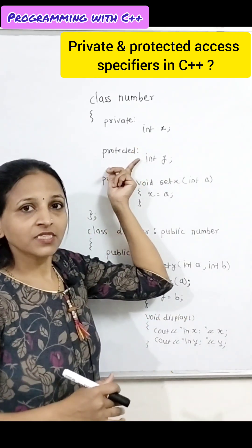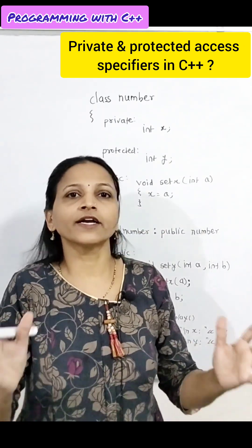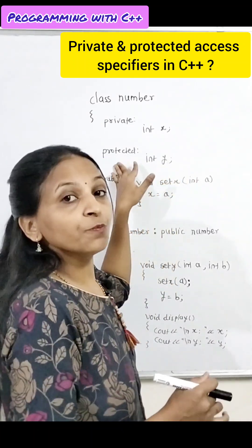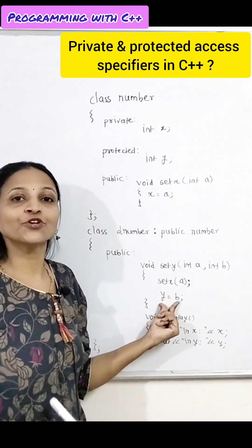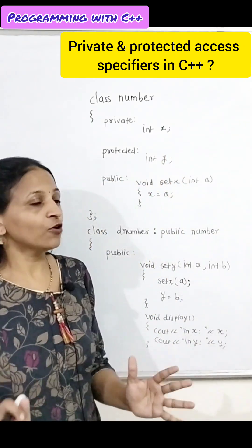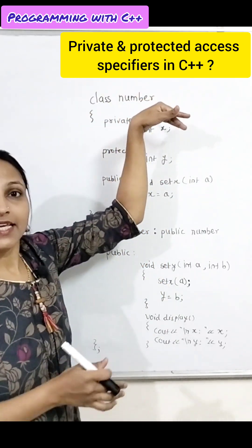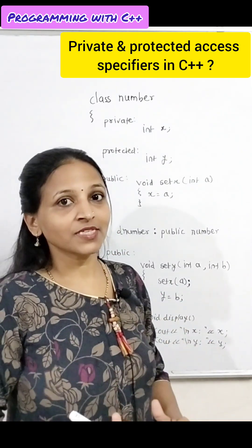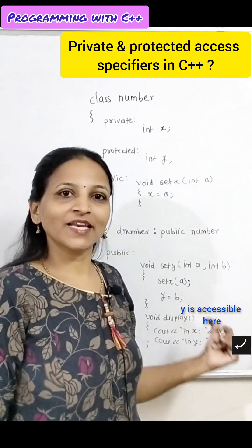Protected members are accessible inside the class as well as its derived class, but not outside that. Here I have declared Y data member as protected. It is accessible here, and you can also access it in a derived class — you can access protected data of a base class. But outside these two, you cannot access Y directly. If you are considering only a single class, there is no difference between private and protected. But when inheritance comes, private data is not accessible in derived classes, but protected data is accessible in derived classes.